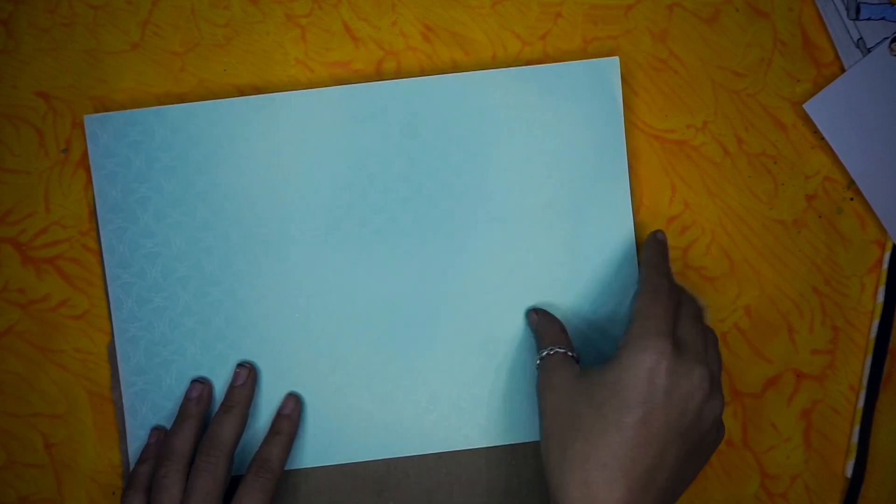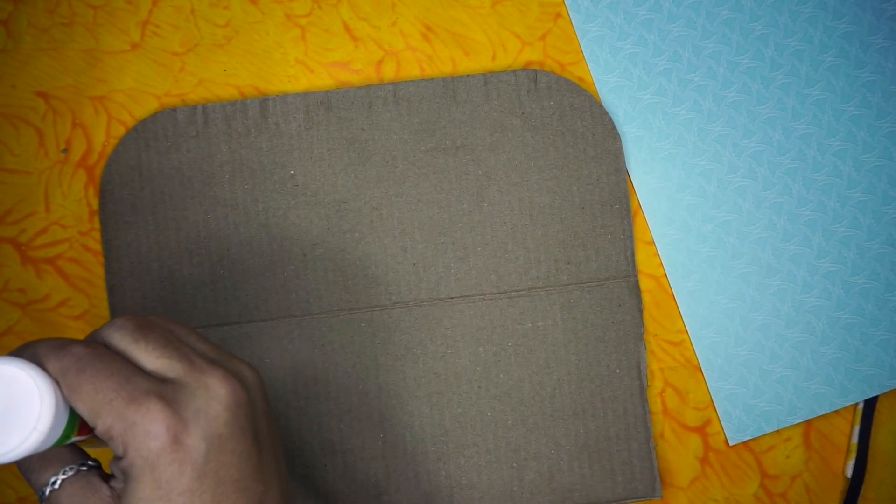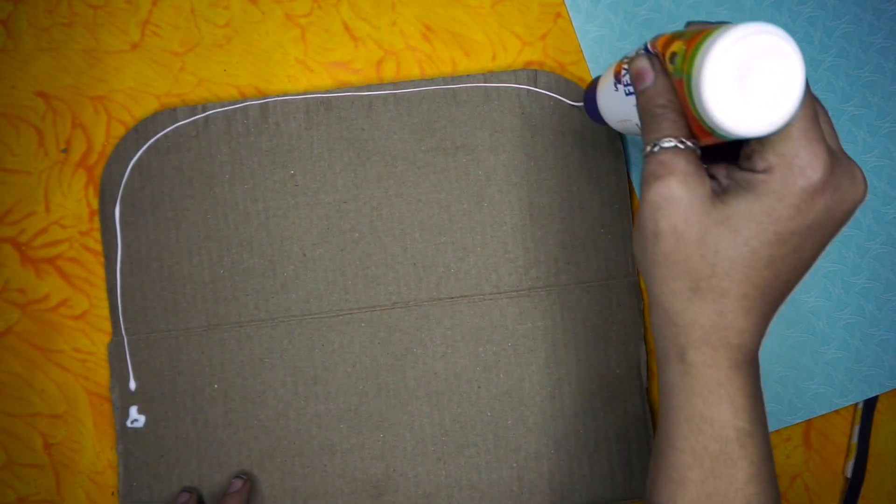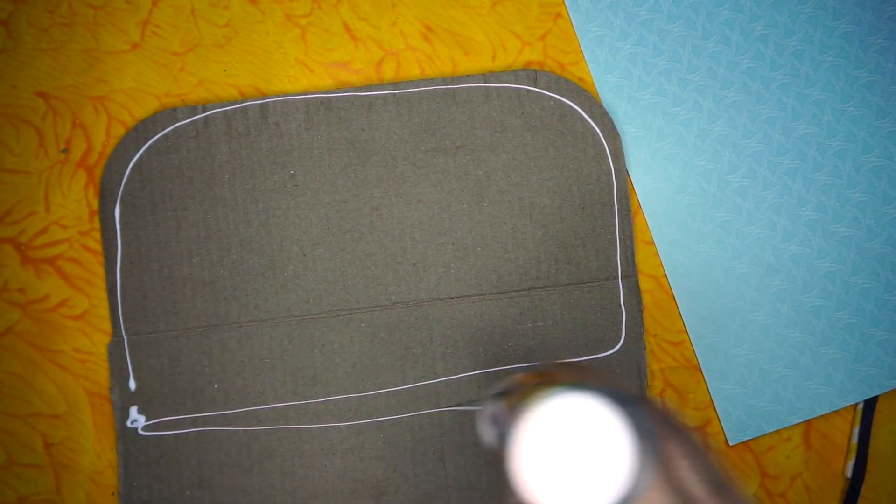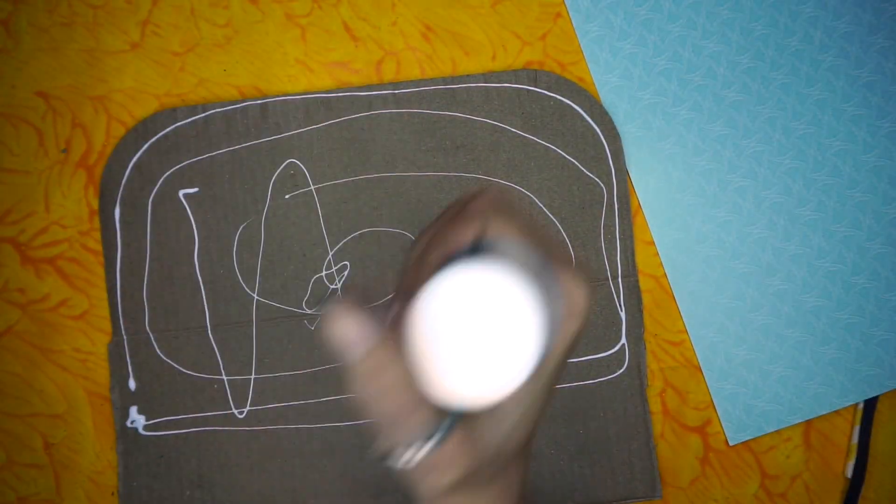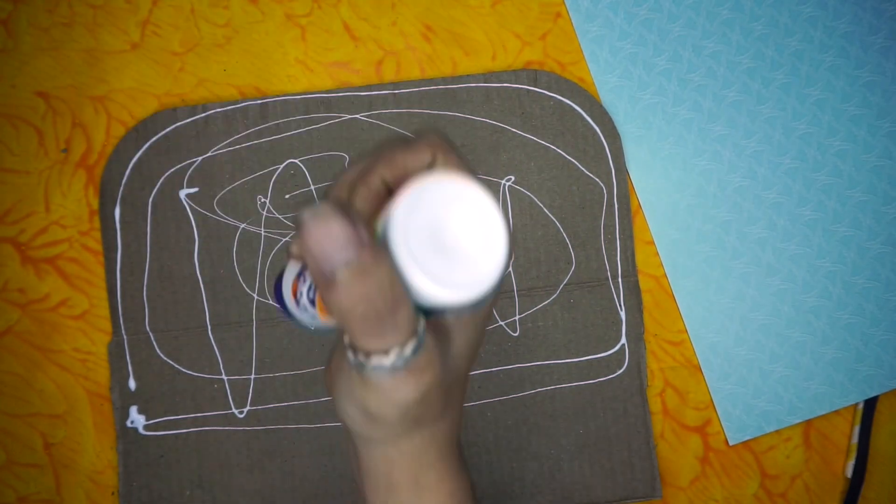Moving on to the next step, now I have pasted a colorful A4 size sheet on cardboard to give a base to a 3D card. I chose sky blue color to give it a look of a scenery. You can choose whatever color you want to.